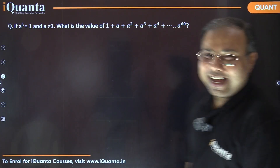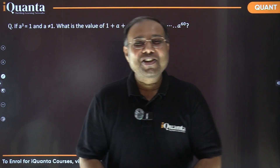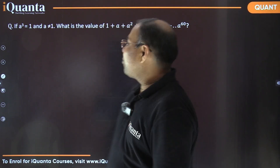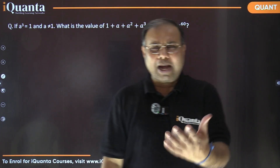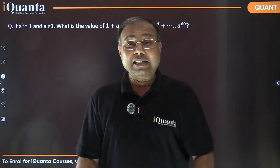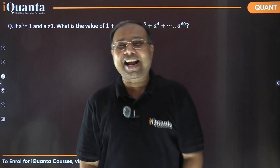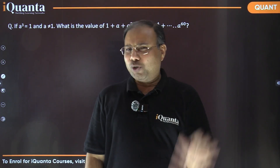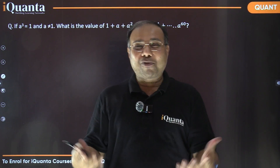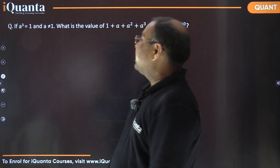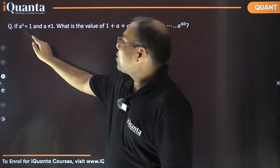And go — here I am back. Let's see how you have been able to solve it. I'm sure many of you must have already solved it. If yes, then congratulations, you are on the right track. And if not, don't worry — you will learn now how to solve these kinds of questions. So it says: if a³ = 1 and a ≠ 1...